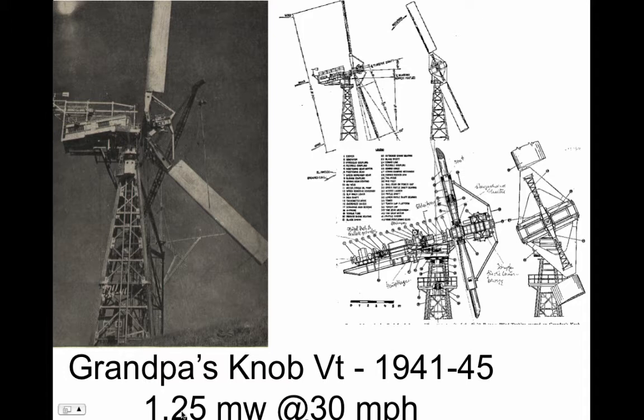The wind turbine we have at the SL center is 10 kilowatts, so this is about a hundred times the size of that wind turbine. And it was built in 1941, ran from 1941 to 1945 at Grandpa's Knob in Vermont, which is in the mountains. Oftentimes there are unusual geographic characteristics of a piece of land that will concentrate wind, and that's often a good place to put wind turbines.